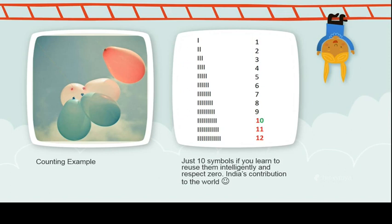In fact, 10 symbols starting from 0, 1, 2, 3, 4, 5, 6, 7, 8, 9 are enough for him to represent any number, as long as he is able to make an intelligent use of 0.